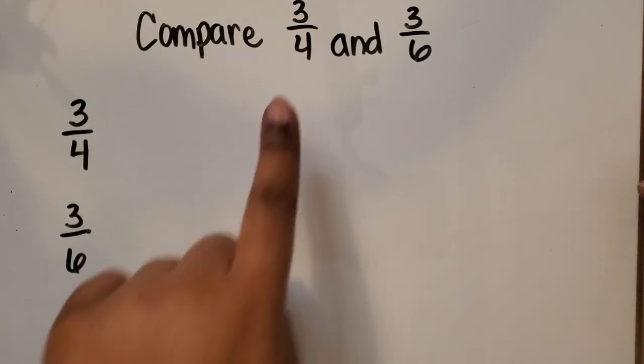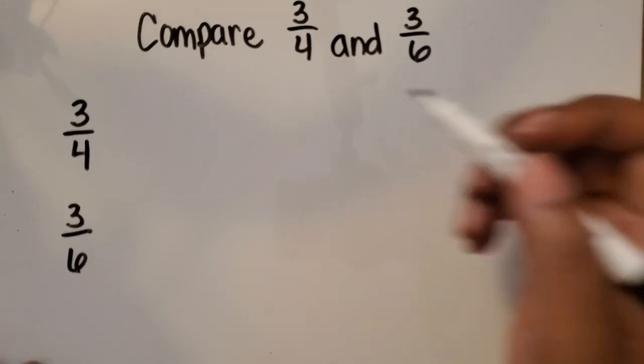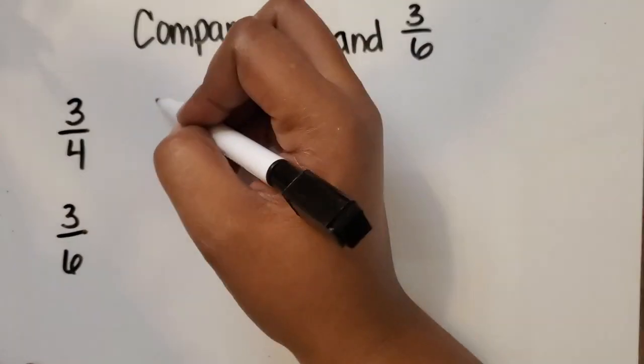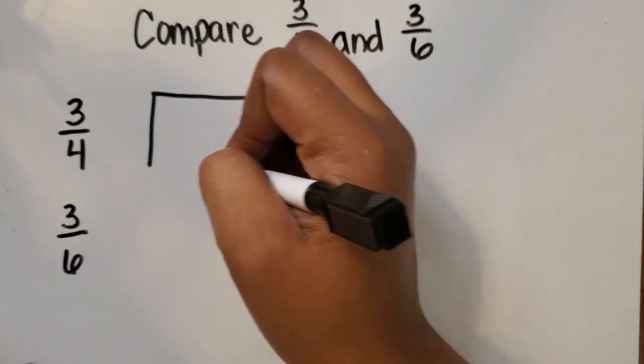We are going to compare the fractions 3 fourths and 3 sixths using rectangular area models. So first we're going to draw 3 fourths. I'm going to draw the rectangle as a whole.